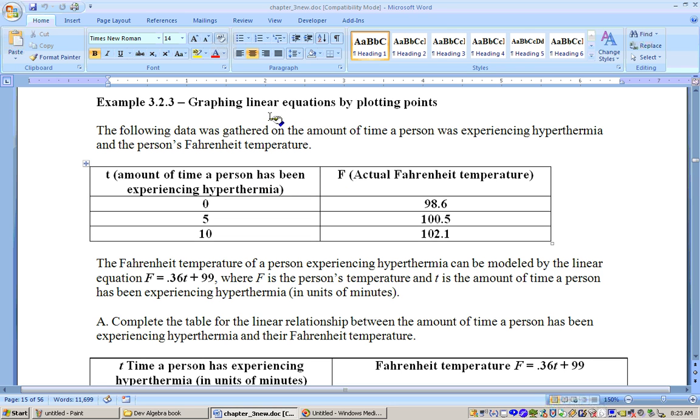Okay, now we're going to start graphing linear equations. There are several ways of graphing linear equations, and one way is by plotting points. We had these actual amounts of time and a person's actual Fahrenheit temperature, and a linear equation or linear model that can approximate these data points is F equals 0.36T plus 99, where T is the amount of time that's passed by, and F is the person's Fahrenheit temperature.